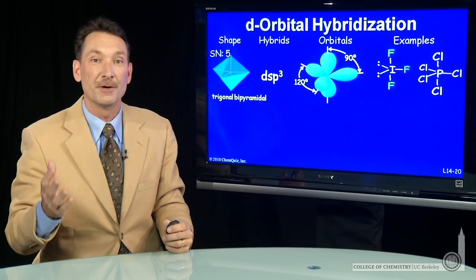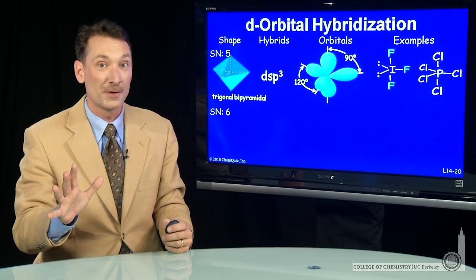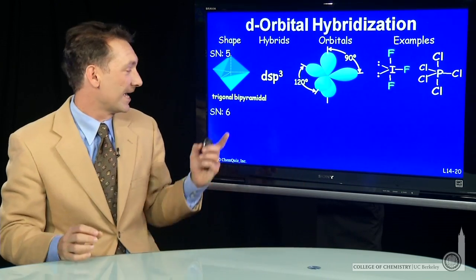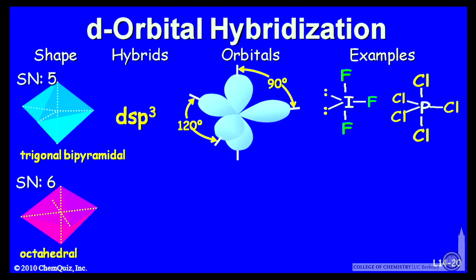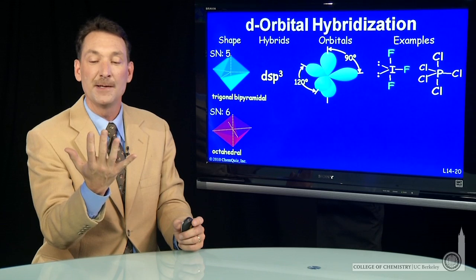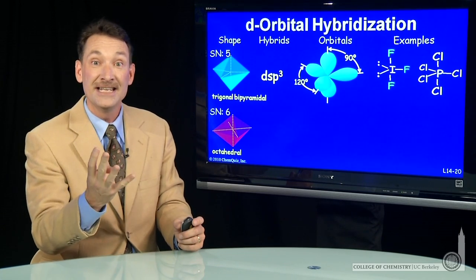If you go to steric number 6, now I need six orbitals to accommodate six things. The shape is octahedral. Six orbitals are s, p, p, p, d, and d.